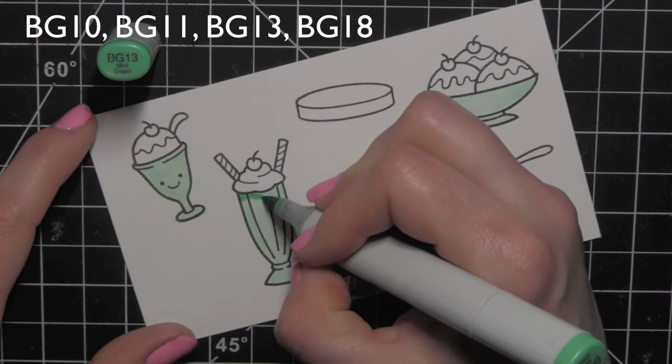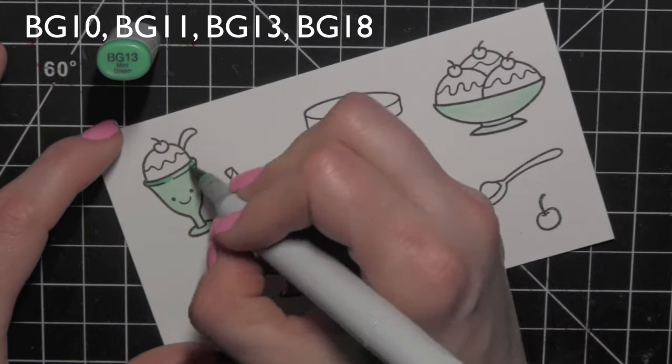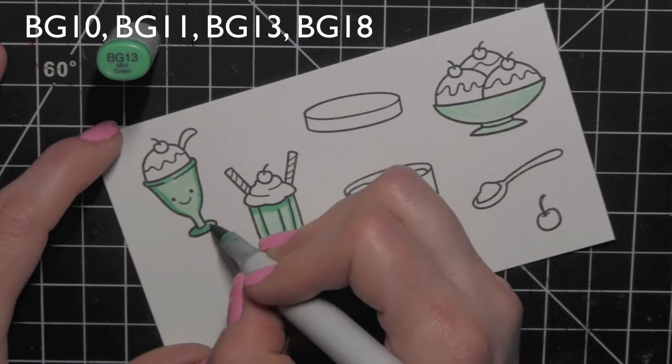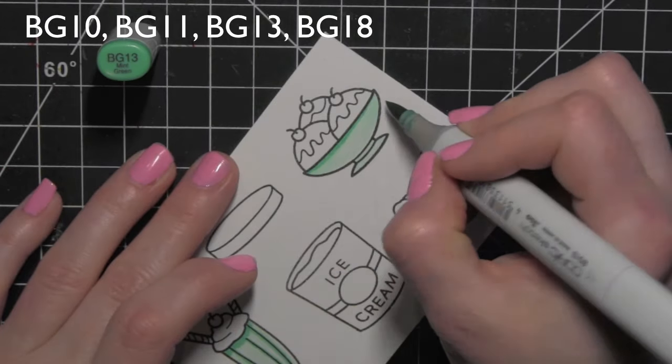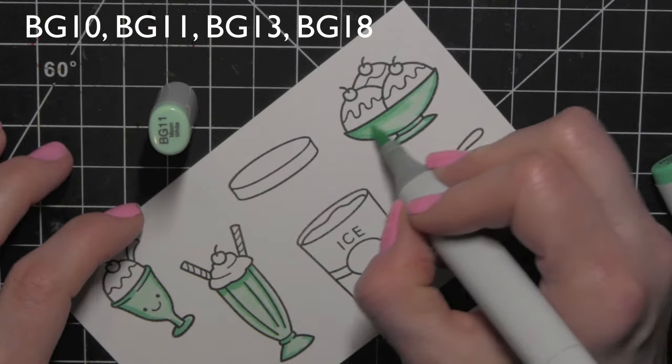To start, I have stamped all the images that I'm going to be using on some smooth white cardstock and I'm coloring them in with Copic markers. The numbers of the Copic markers I'm using are shown in the upper left corner of the screen.